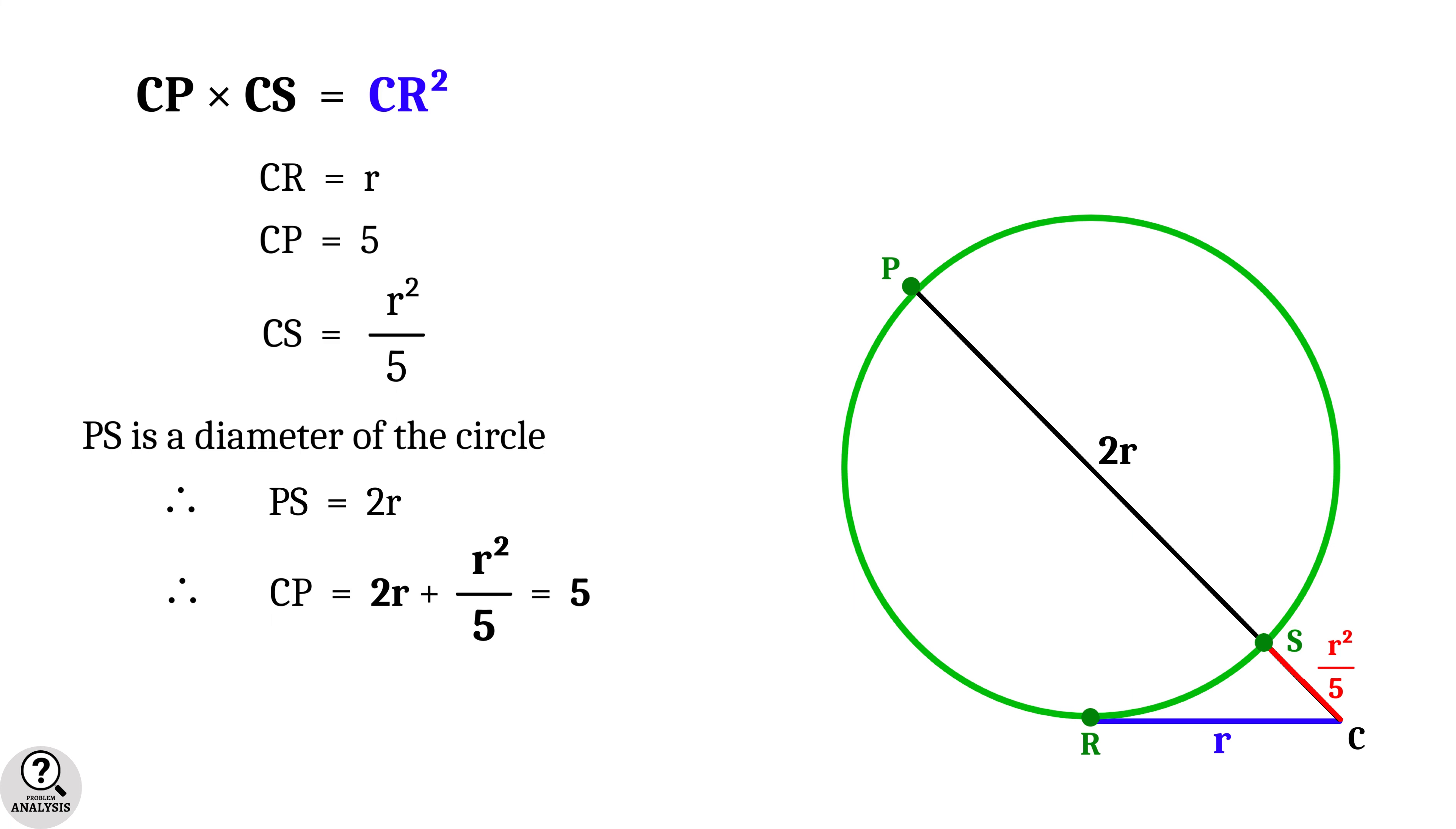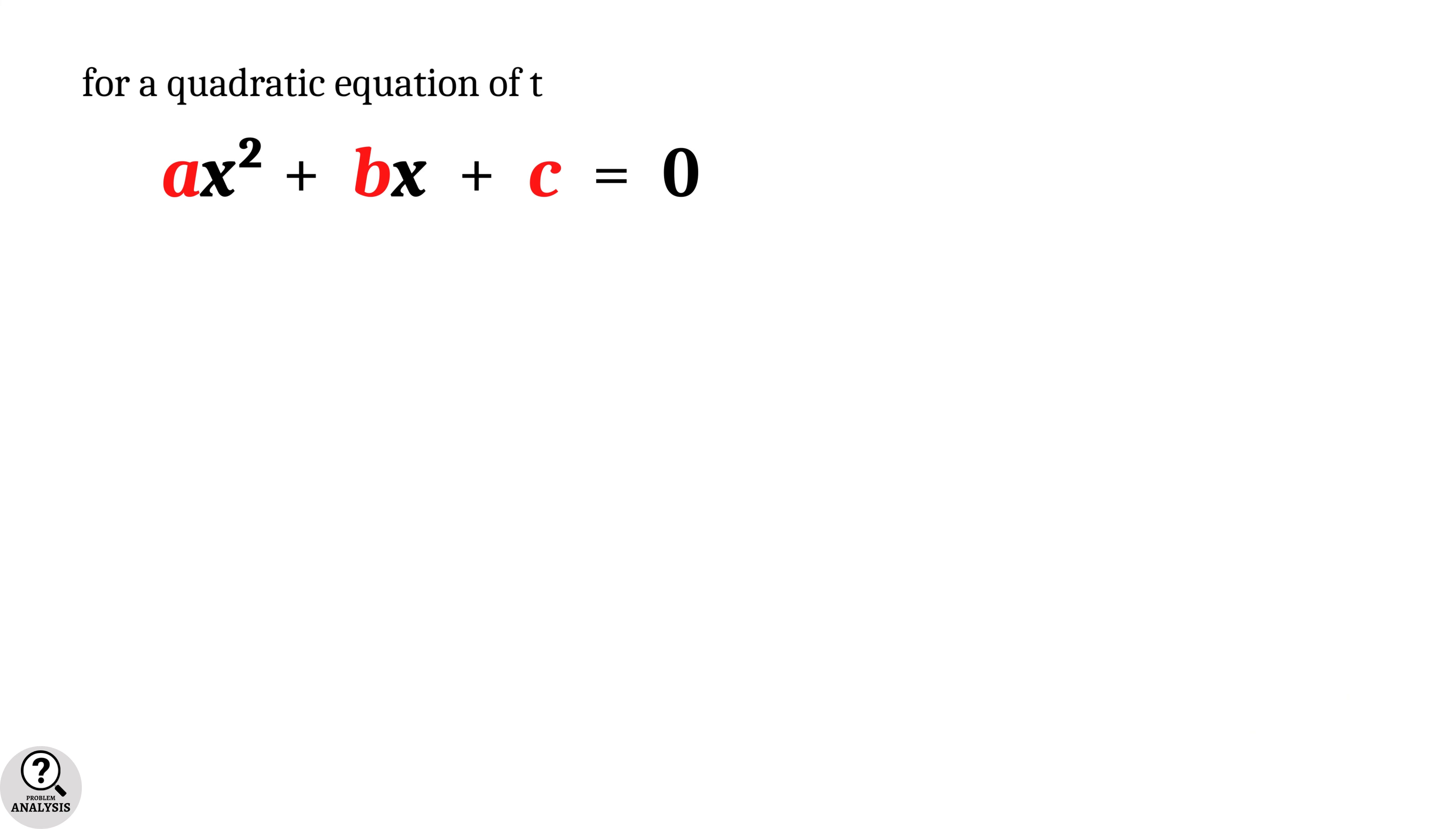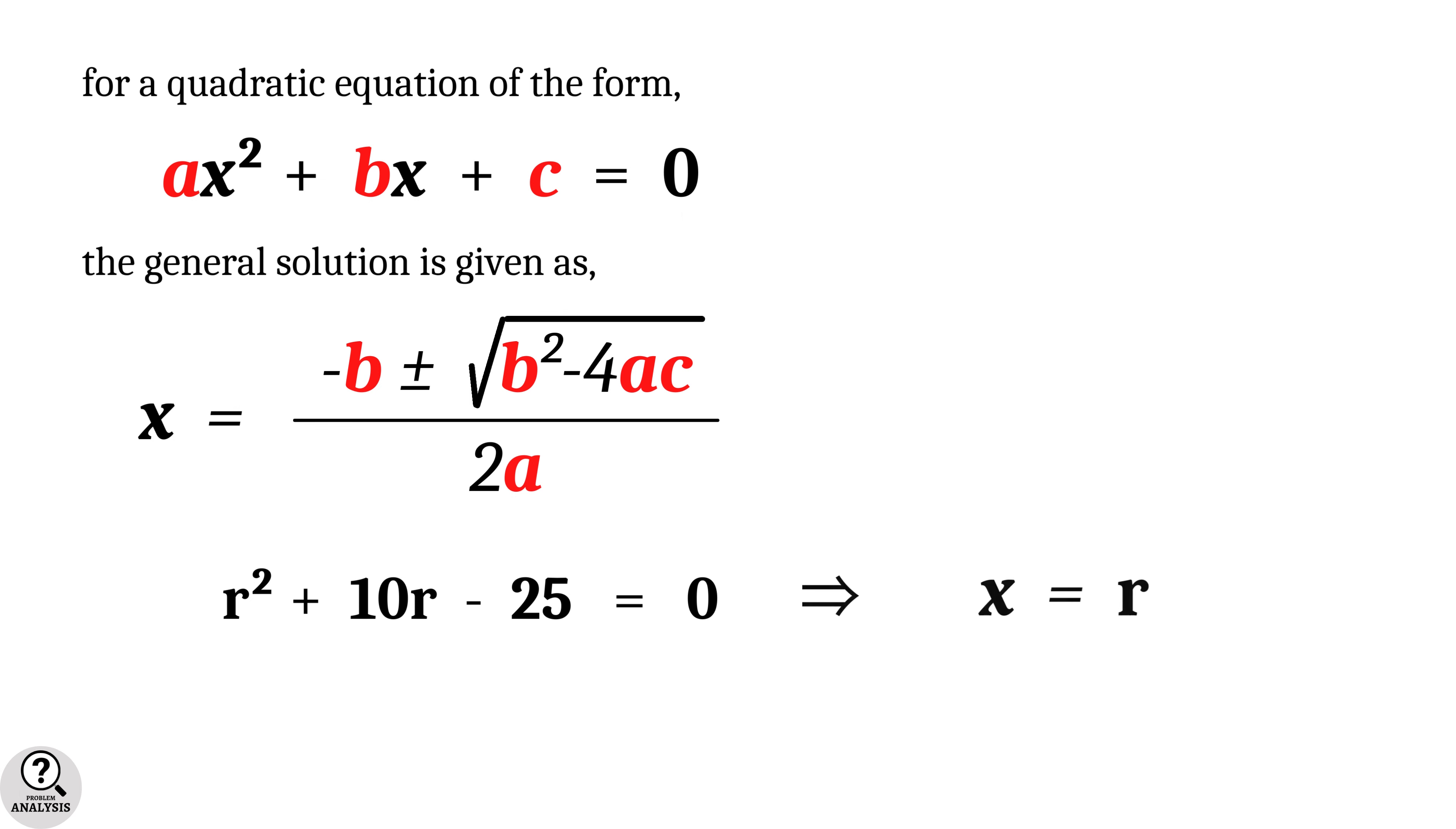Simplifying this equation will give a quadratic equation r square plus 10r minus 25 equal to 0. Now in general, if we have a quadratic equation AX square plus BX plus C equal to 0, then the general solution is given as X equal to minus B plus or minus square root of B square minus 4AC whole divided by 2A. And here the equation is r square plus 10r minus 25 equal to 0. So the variable X equal to r and the constants A equal to 1, B equal to 10 and C equal to minus 25.